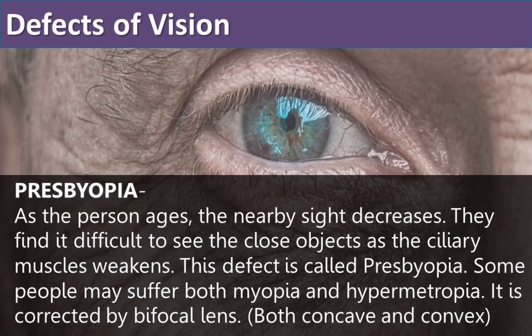The next defect is caused due to aging. As our age increases, our near-sightedness decreases — this is called presbyopia. As the person ages, the nearby vision decreases and they find it difficult to see close objects, as the ciliary muscles weaken. This defect is called presbyopia.